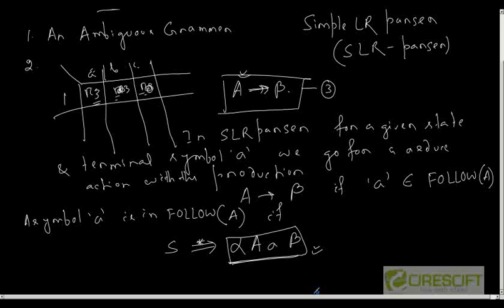This is the main difference between an SLR parser and an LR0 parser — there is no other difference. We use the same concept of item sets and create the DFA from the set of items, and populate the parse table following the other rules in the same fashion. The shift action, accept action, and go-to actions all remain the same. The only difference is the reduce action takes place only when the grammar terminal symbol is in the FOLLOW of that particular non-terminal.